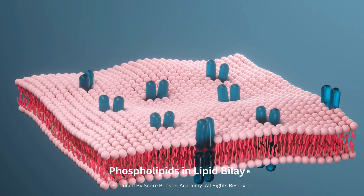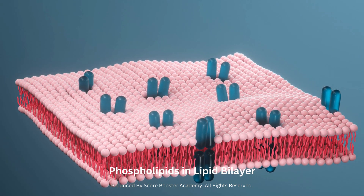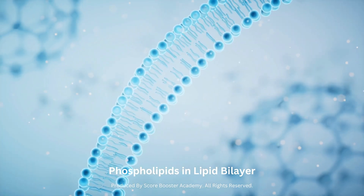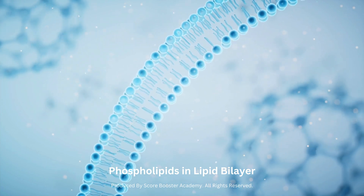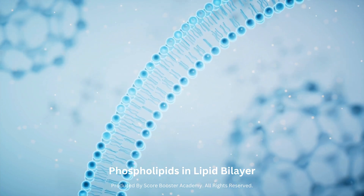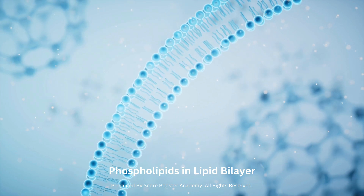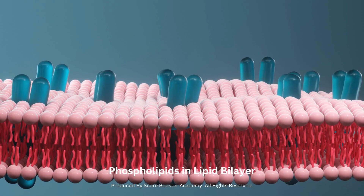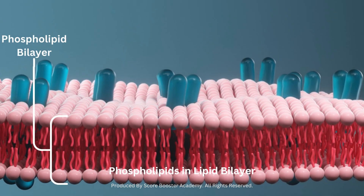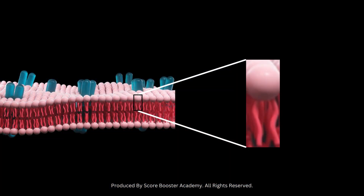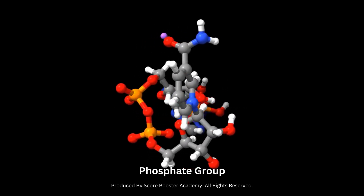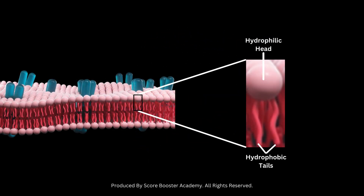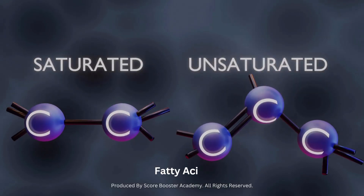The phospholipids in the lipid bilayer have the ability to move laterally within the plane of the membrane. This fluidity allows for dynamic changes and flexibility in the membrane. The primary component of the cell membrane is a double layer of phospholipid molecules. Each phospholipid has a hydrophilic, or water-loving, polar head made of a phosphate group, and hydrophobic, or water-repelling, nonpolar tails made of fatty acids.